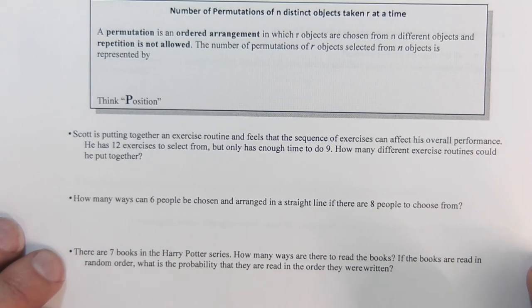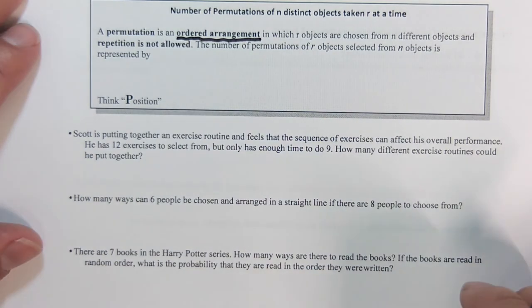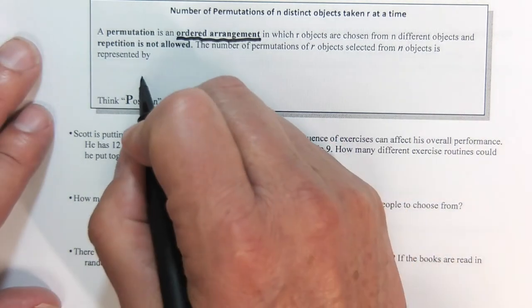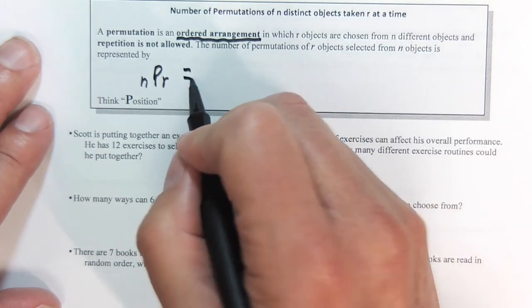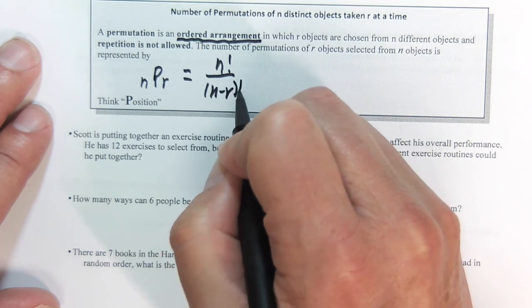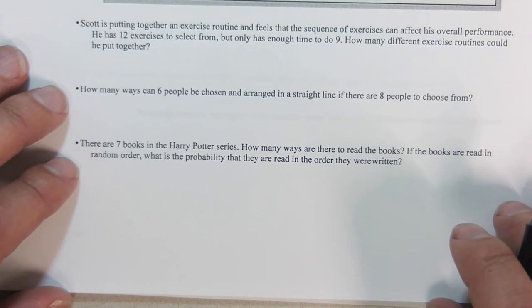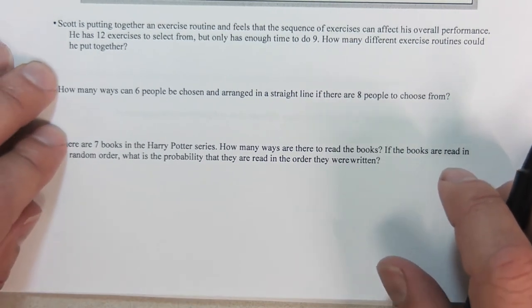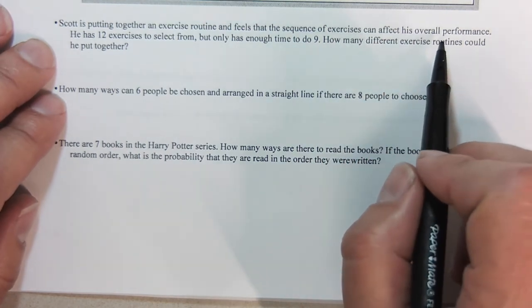Now, this is versus permutations. Permutations, the order does matter. So it's an ordered arrangement. This is like the first one is the president, the second one is the vice president, or first place, second place. That's when the order matters. So this is nPr. And its definition is n factorial divided by n minus r factorial. But once again, we're going to have this do the work for us.